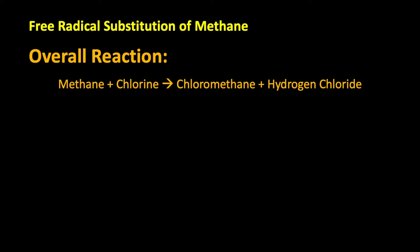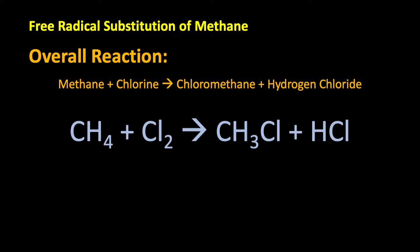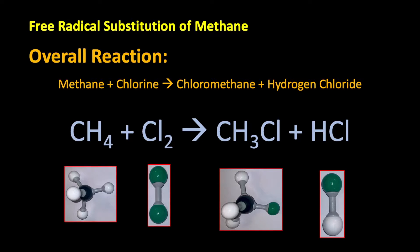Free radical substitution involves radicals, and a radical is a species with an unpaired electron. Here's our overall reaction: we're going to take methane, react it with chlorine, make chloromethane and hydrogen chloride. We can visualize the molecules in a bit more detail — we are taking a hydrogen off methane, replacing it with a chlorine atom, and making hydrogen chloride.